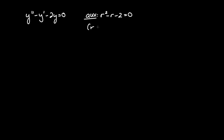To factor this, we need two numbers that multiply to negative 2 and add to negative 1, which are negative 2 and positive 1. That gives us our two solutions: r1 equal to negative 1 and r2 equal to positive 2.